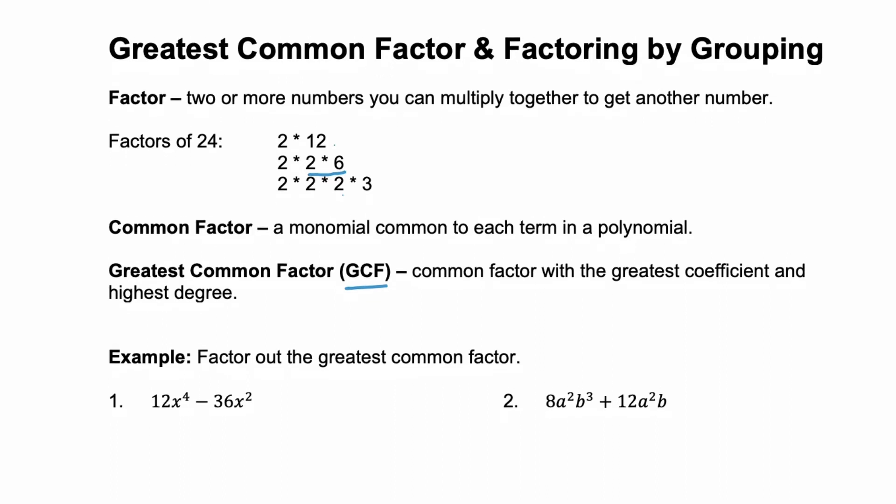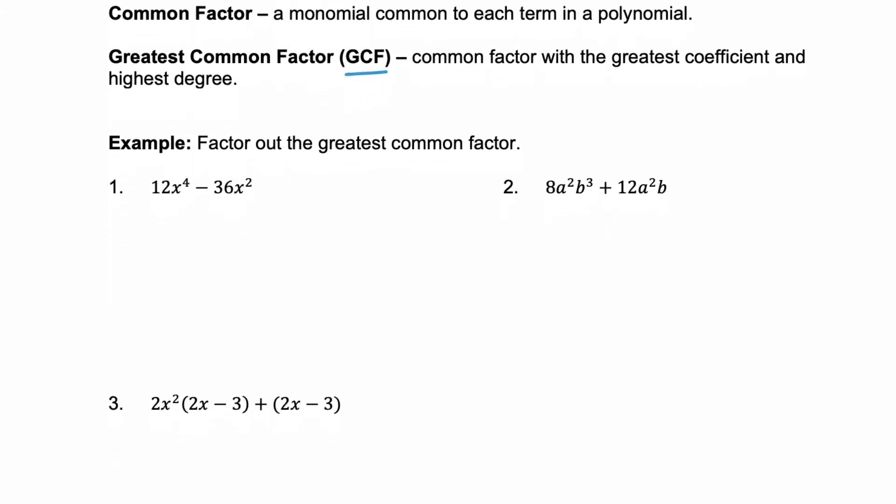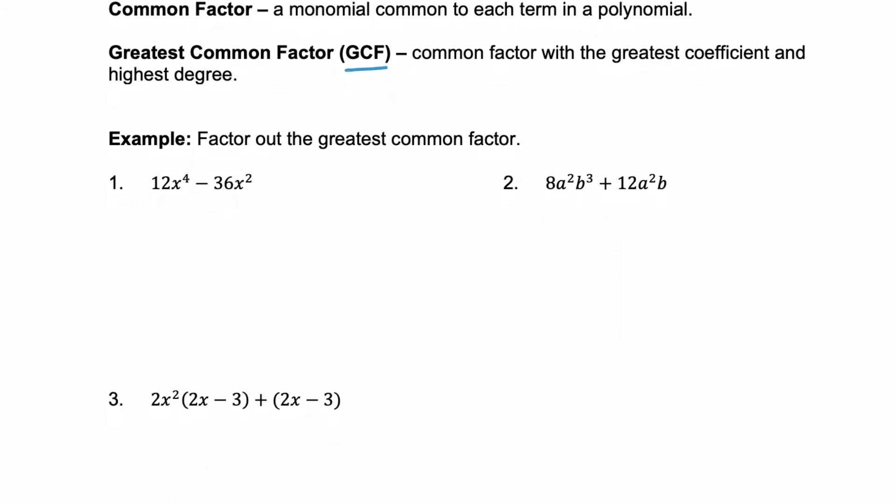Let's look at a couple of examples. These first three examples, we need to factor out the greatest common factor. In example 1, we have two terms. Our first term is 12x to the 4th, and our second term is negative 36x squared. Now notice that we can factor this first term as 1 times 12 times x, x, x, and x. We have four x's there for the x to the 4th.